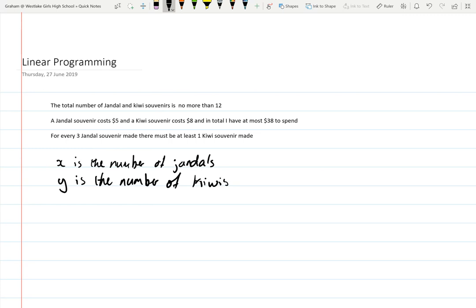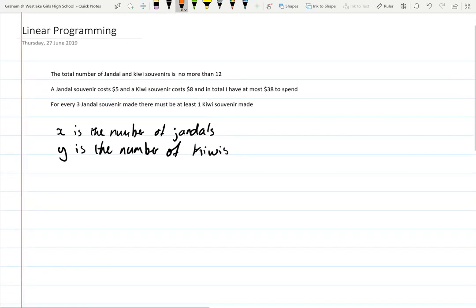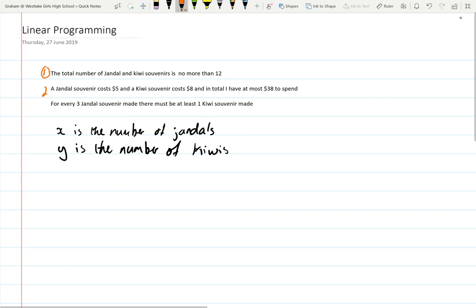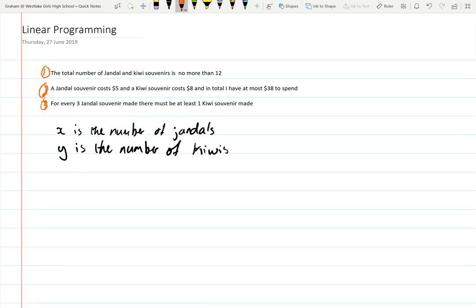Okay, so those are my two things that I'm working with. I'm going to number my equations so that I can go through these. The first one: the number of Jandall and Kiwi souvenirs is no more than 12. So my equation there is the number of Jandalls which is x plus the number of Kiwis which is y, but it's no more than 12, so that means it could equal 12 but it can't go bigger than 12. So that's got to be x + y less than or equal to 12.